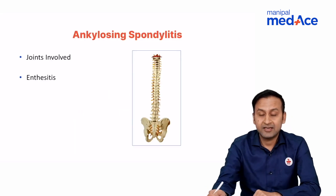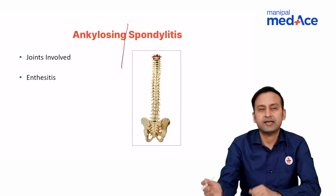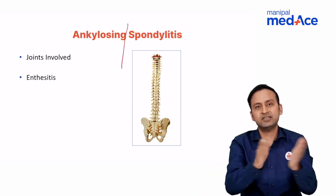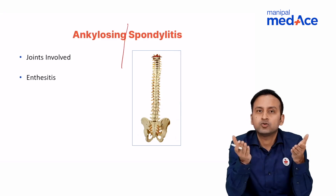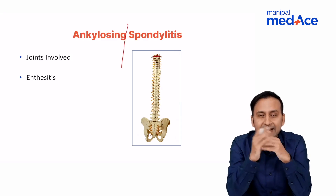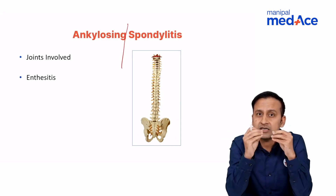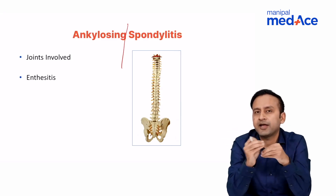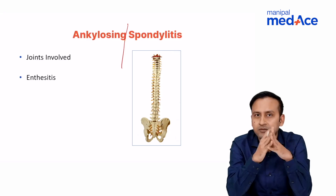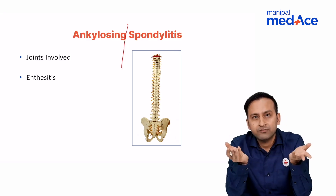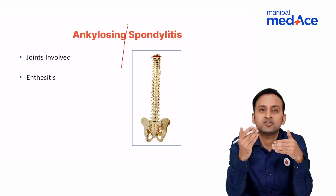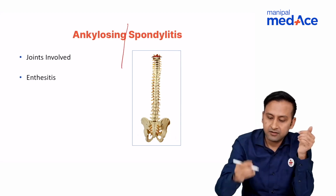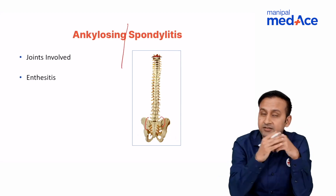To begin with ankylosing spondylitis, let us split the two words. 'Spondylitis' means anything to do with the spine — 'itis' means inflammation — so it is a disease causing an inflammatory reaction in the spine. The joints involved are the facetal joints between the vertebrae and the eyelid plates.